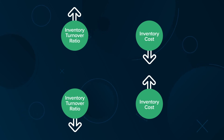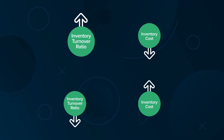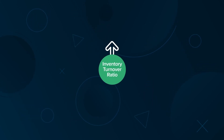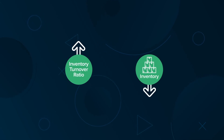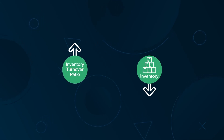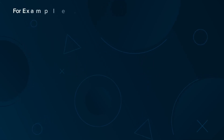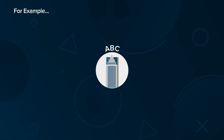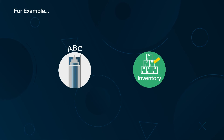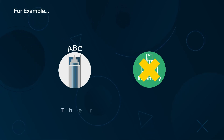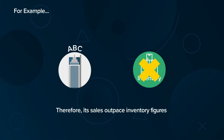However, that may not always be the case. A high inventory turnover ratio can also imply insufficient inventory. For example, ABC may not always have enough inventory on hand to manufacture its products, and therefore its sales outpace inventory figures.